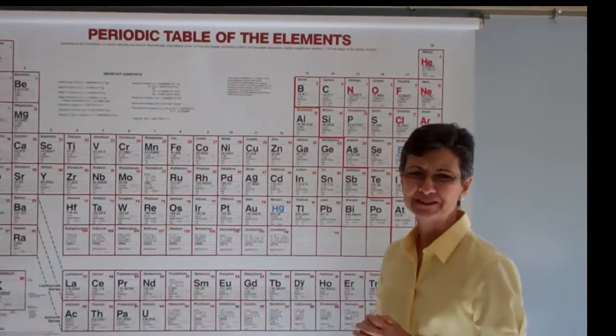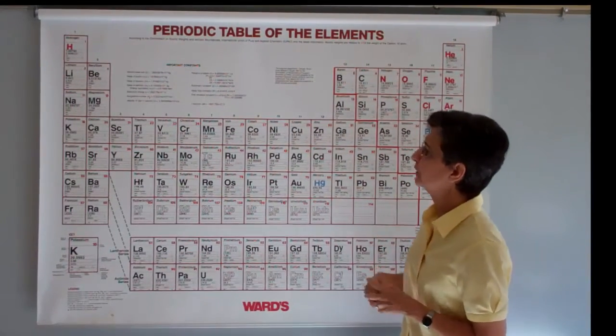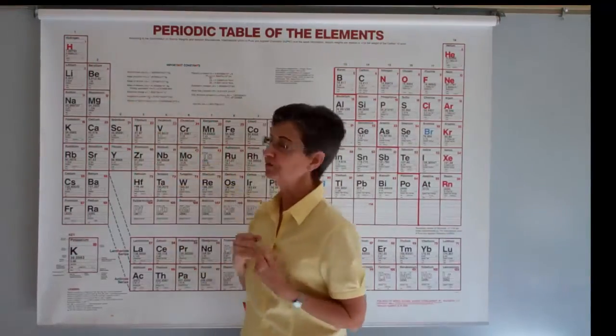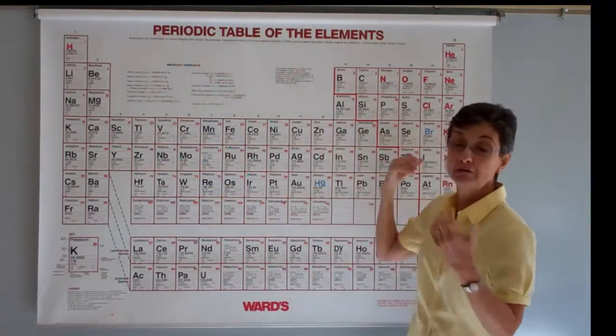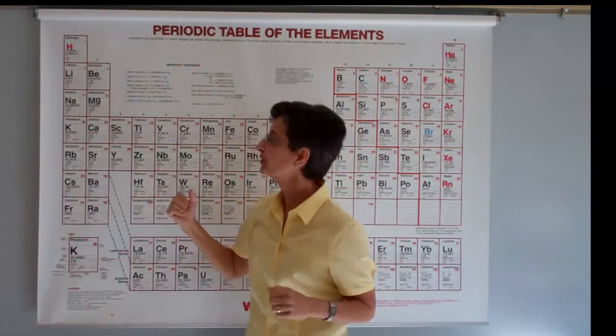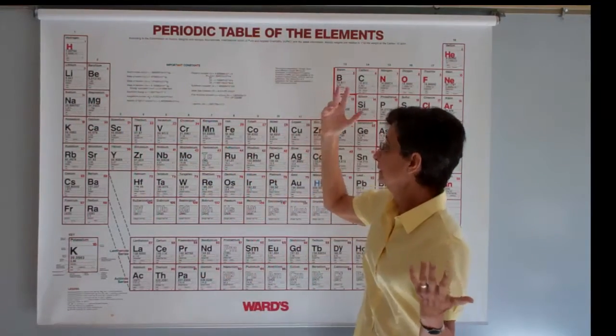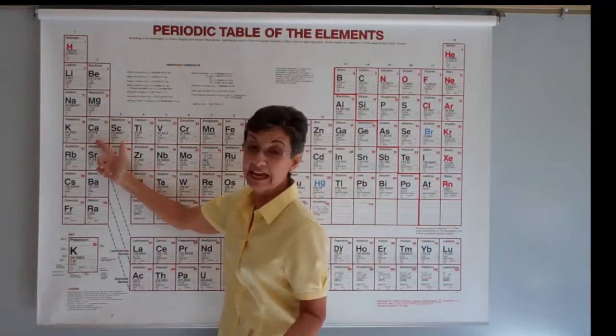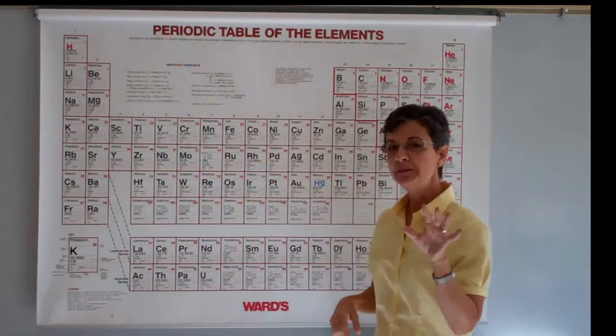Now, some are pretty intuitive. For example, H for hydrogen, B for boron, Li for lithium, Ca for calcium. But some others are not.